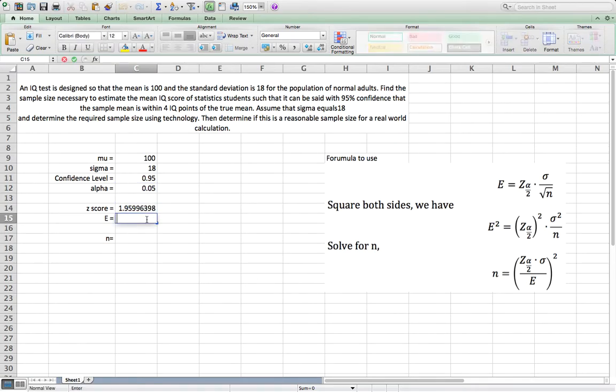Then the e is given, because they say they want the sample mean to be within 4 of the true mean. That means the margin of error is 4.